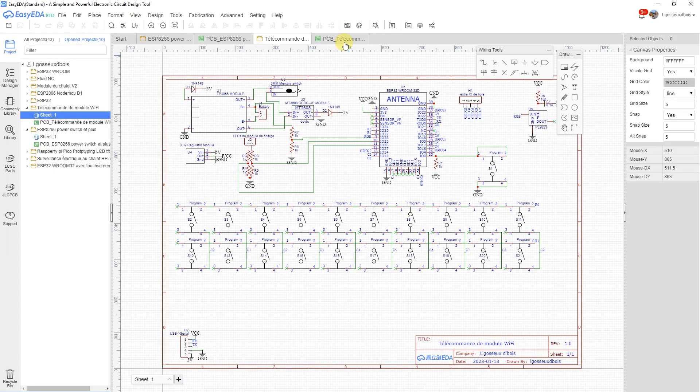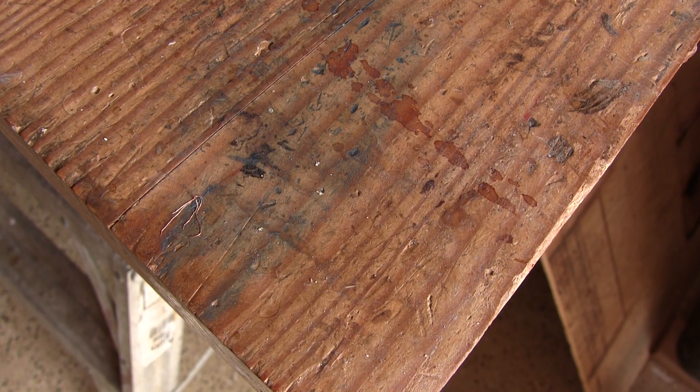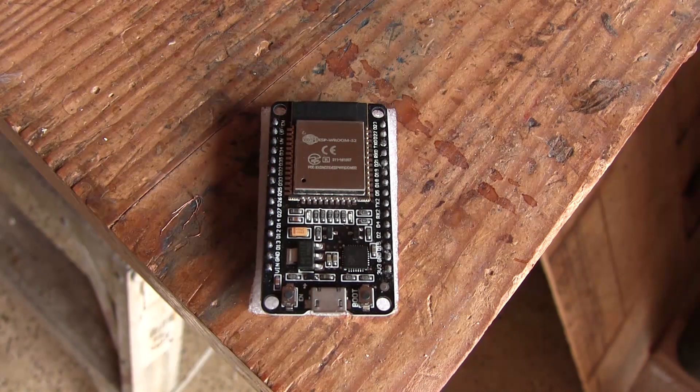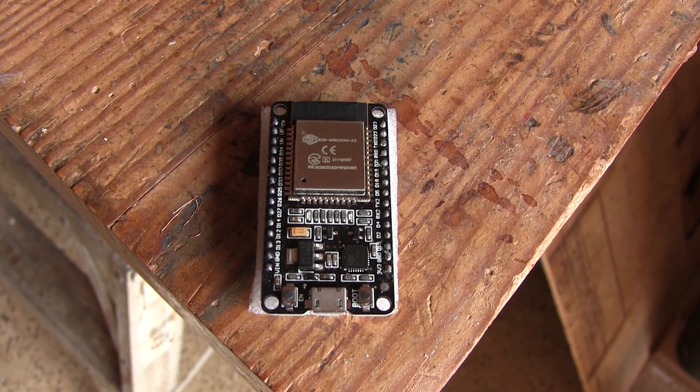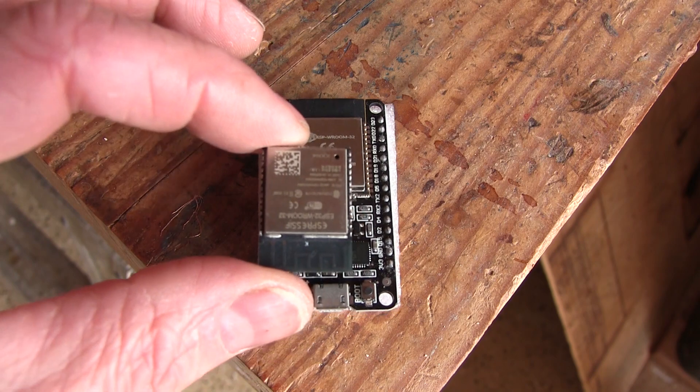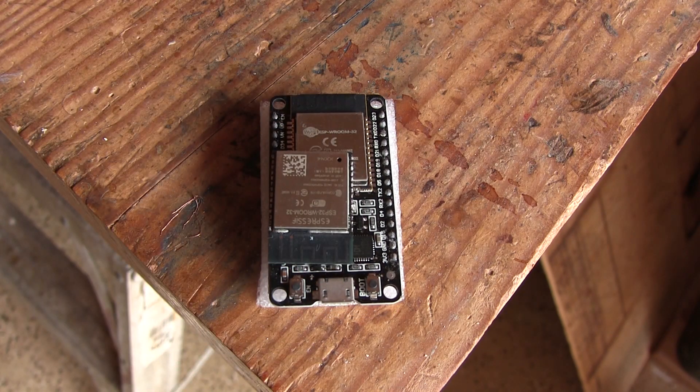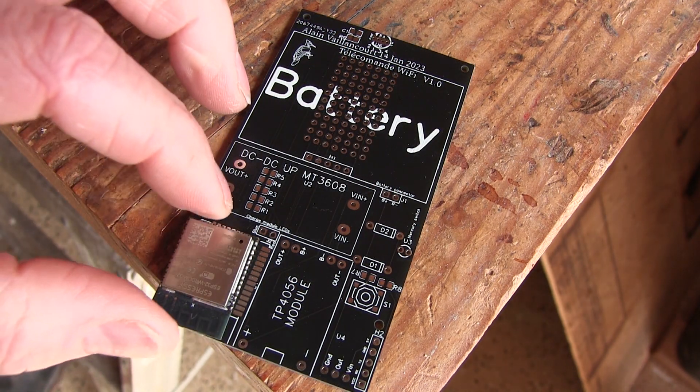So I draw another plan and another PCB. Usually, people who use these microcontrollers use this kind of module because it's convenient. Everything is on that small PCB, but it's way too big for what I want to do. So I'm going to only use the main module and not all the rest. It's installed right here on my PCB.